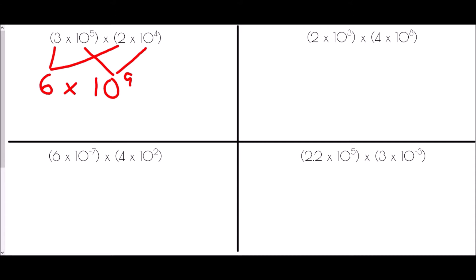Continuing with the same method: 2 times 10 to the power of 3 times 4 times 10 to the power of 8. We join together the two values — 2 times 4 gives 8. Then 10 to the power of 3 times 10 to the power of 8: our laws of indices tell us to add those powers, so 3 plus 8 gives 11. The answer is 8 times 10 to the power of 11.